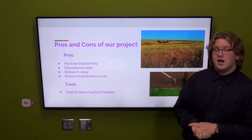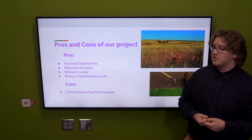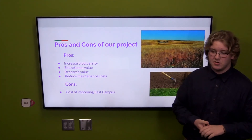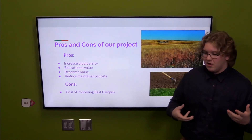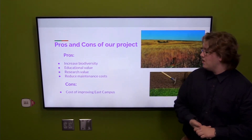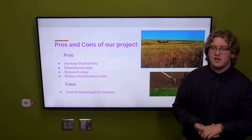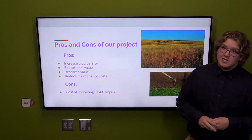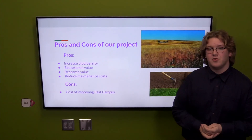So we need to talk about pros and cons of this plan. The pros are increasing biodiversity for ecosystem health and ecosystem services. There is also educational value — not just for agriculture and natural resources students, but even writing classes currently take trips to Nine Mile Prairie to see how a natural area can inspire artistic endeavors. We also have research value, and reduced maintenance costs. The main con is the initial investment required, as we will have to remove sod and plant seed.